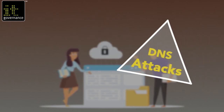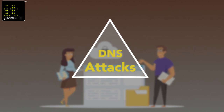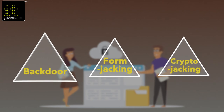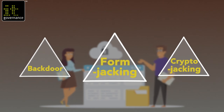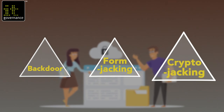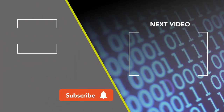DNS or domain name system poisoning attacks compromise the DNS to redirect traffic to malicious sites. Backdoors allow remote access. Form jacking inserts malicious code into online forms. And crypto jacking installs illicit cryptocurrency mining software.